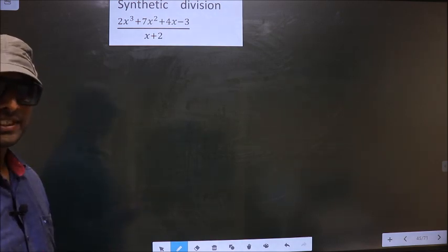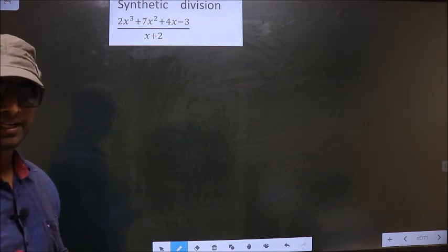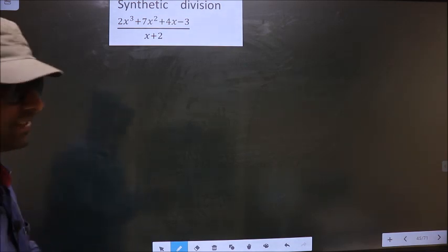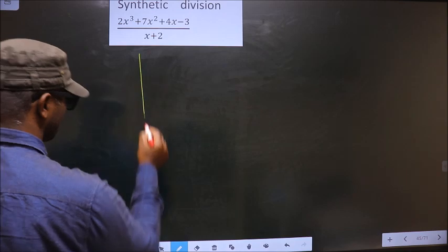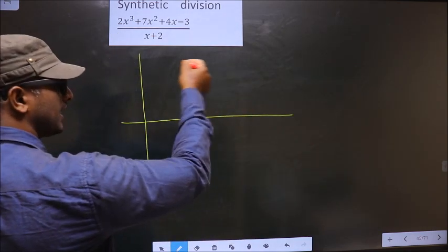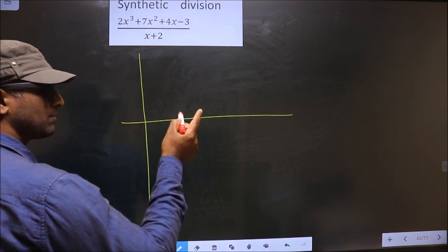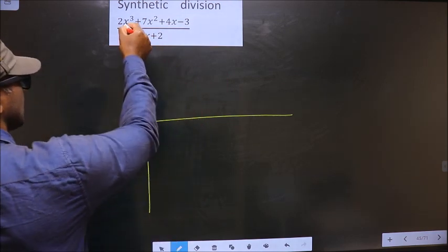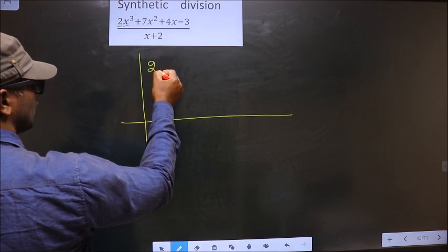To do synthetic division, first we should frame it in this way. See. Here we should write coefficients taken from the numerator. So starting with x cubed coefficient, that is 2.